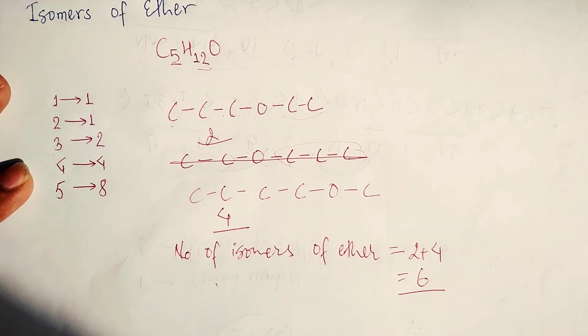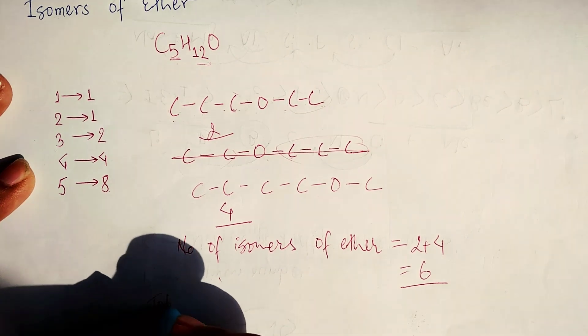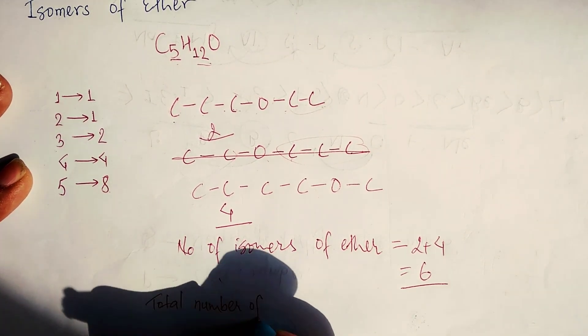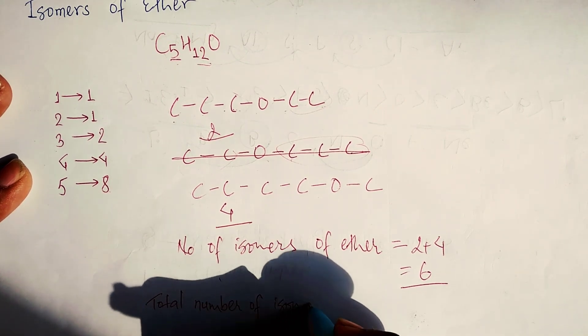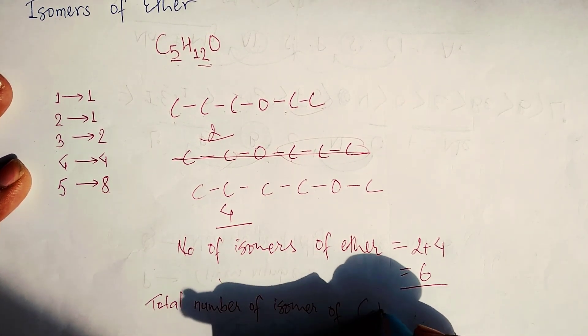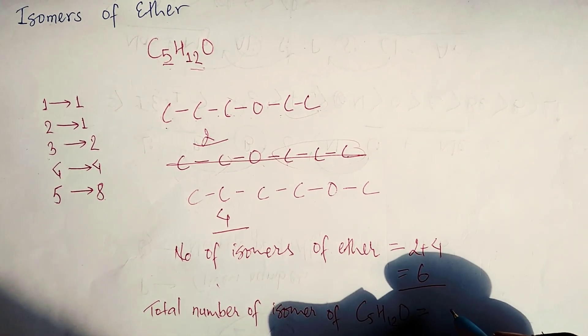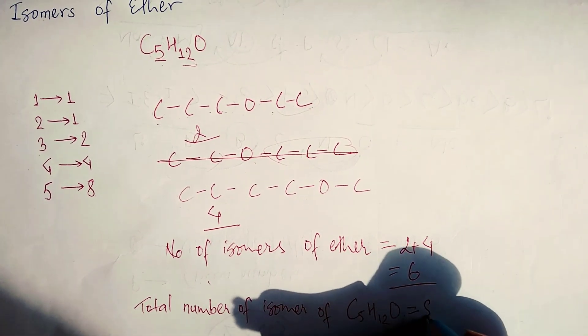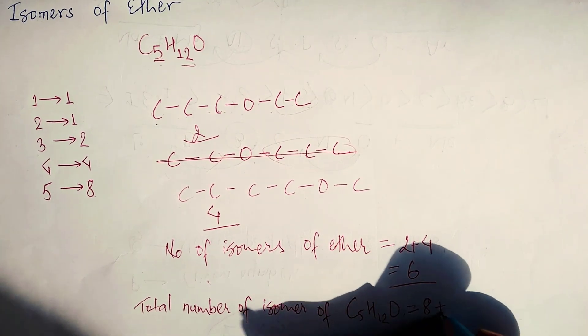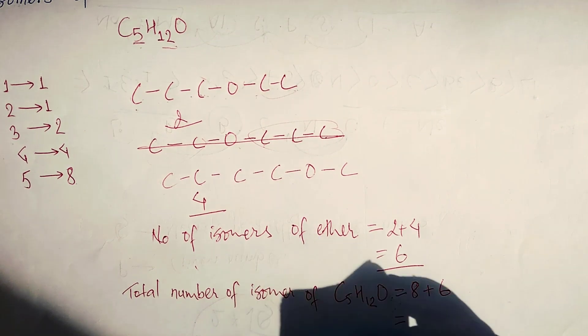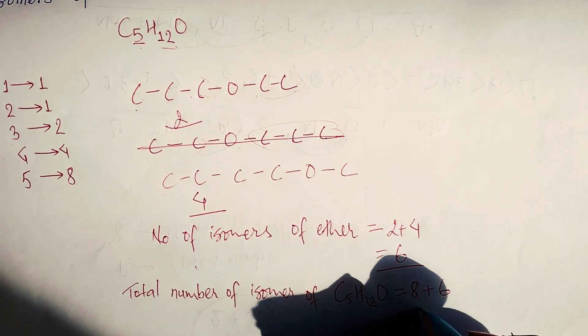Now if you find the total number of isomers of C₅H₁₂O, it will be 8 from alcohol and 6 from ether. This will be 14. There are 14 isomers in this formula.